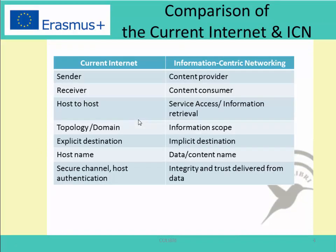Let's compare the current internet with ICN. In the current internet we have a sender; in information-centric networking it is the content provider. The receiver in the current internet is the content consumer. If in the current internet we have host-to-host communication, then in ICN we don't have end-to-end host-to-host communication, but instead we have a service which provides information — this is information retrieval. In the current internet, since it's designed as a host-centric network, we have a topology; but in information-centric networking it's just an information scope where you can get the information.